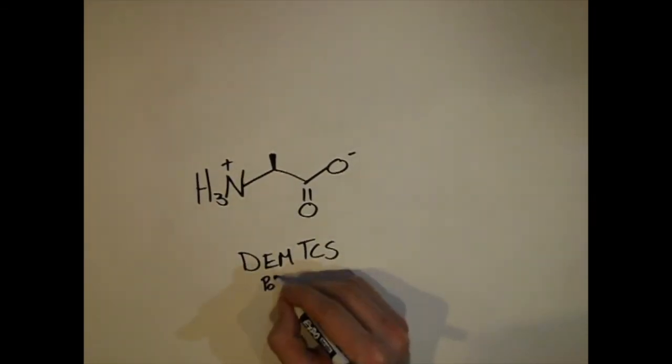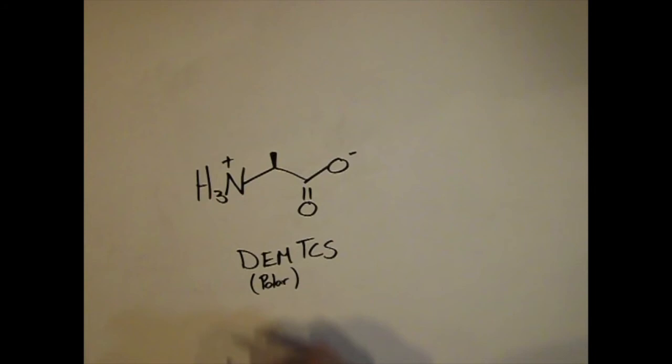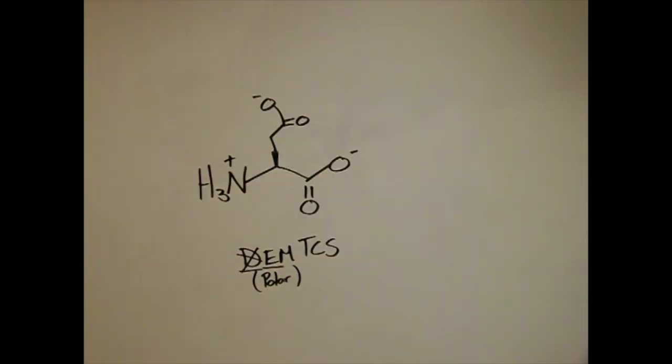Now we go to demtacos which is the polar groups because polar bears love tacos. The first of the polar amino acids is aspartate. Aspartate is a lot like asparagine but with an oxygen instead of a nitrogen. Then we go to glutamate. Glutamate is a lot like glutamine but with an oxygen instead of a nitrogen.